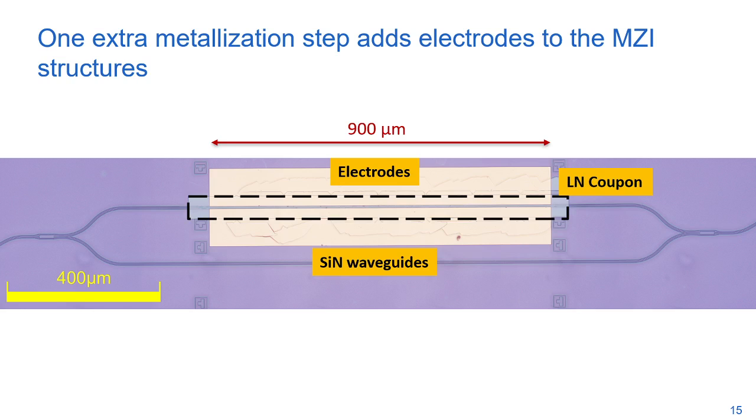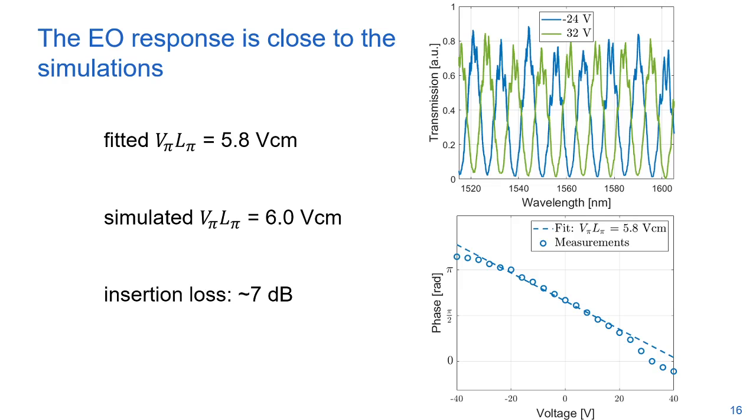To measure the active properties, one extra metallization step adds electrodes to the Mach-Zehnder interferometer structures. Even though the coupon is one millimeter long, the electrodes were only 900 microns long. The electro-optic response is close to simulated values. By varying the voltage over a large window, we can create a full pi phase shift. Fitting a sine to these results yields a half-wave voltage length product of 5.8 volt-centimeters, slightly below the simulated value of 6 volt-centimeters. We attribute this to slight misalignment of electrodes, which may have improved the half-wave voltage length product but also increased insertion loss to around 7dB.